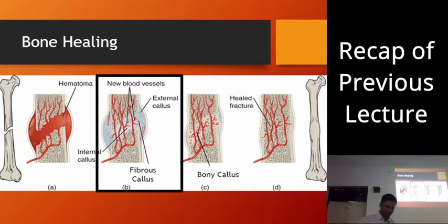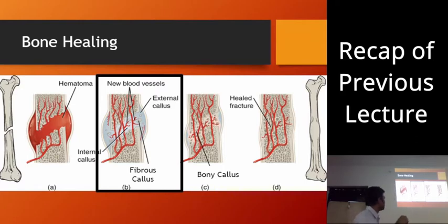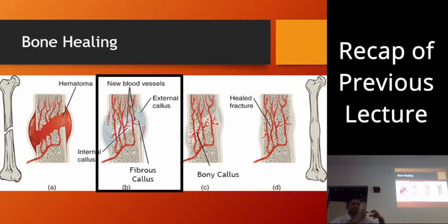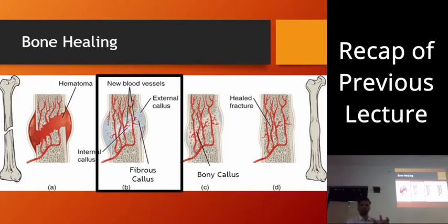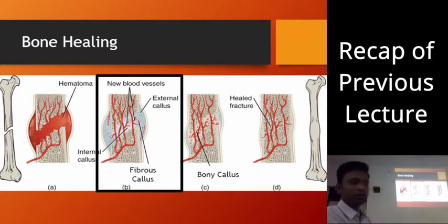In the fibrous callus stage, we have new blood vessel formation — new angiogenesis. When we stretch this fibrous callus slightly, one mm per day, these new blood vessels are torn. There is a micro trauma to this callus, so there is new blood clot formation, and that clot formation leads to another fibrous callus formation.